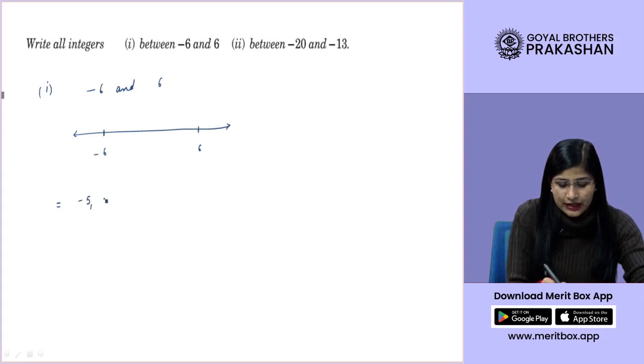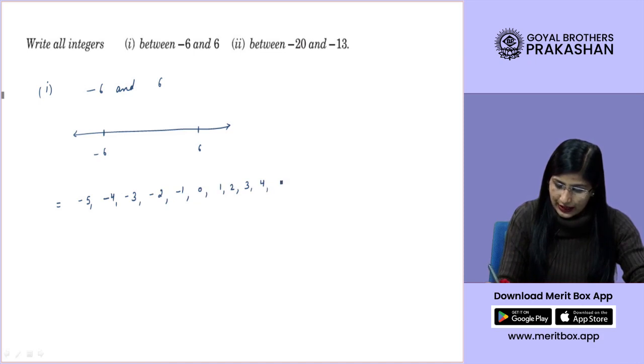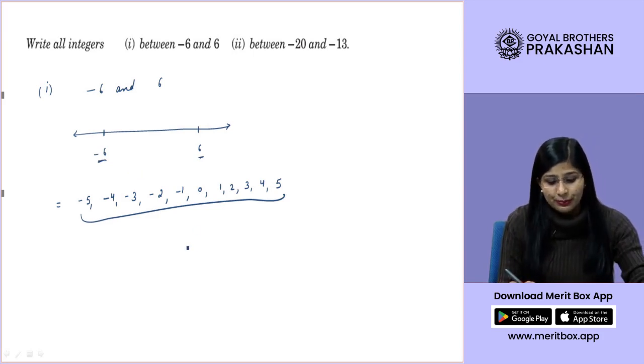So, what will be the integers? It will be minus 5, minus 4, minus 3, minus 2, minus 1, 0, 1, 2, 3, 4 and 5. As they say between, you will not include minus 6 and 6. If they would have written from minus 6 to 6, we would have included in the answer minus 6 and 6 also.